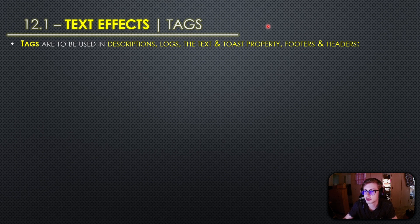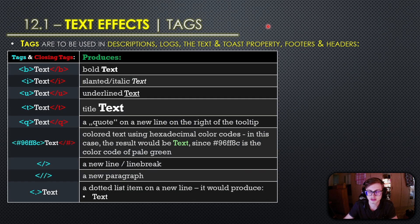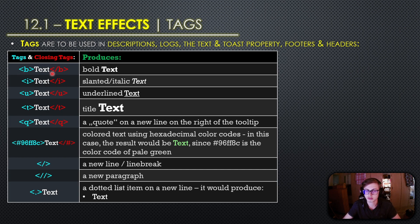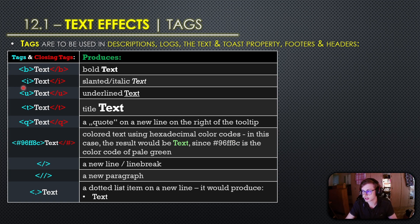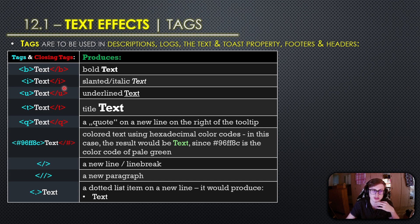Let's take a look at what tags you can use in your game with this table. One important thing to mention is that tags need to be encased inside angled brackets. First up we have the B tag which makes the text after it bold, and if you only want a certain part of your text to be bold you can use the closing tag slash B to end the styling process. Then we have the I tag which styles the text to be slanted, and you can use slash I to end the styling process — the same applies for all the following tags as well.